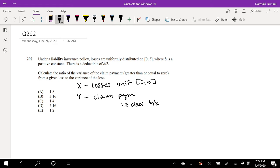Calculate the ratio of the variance of the claim payment greater than or equal to 0 from a given loss to the variance of the loss. Okay, yeah, I think that makes sense. So then, we know that for X, the variance of X.